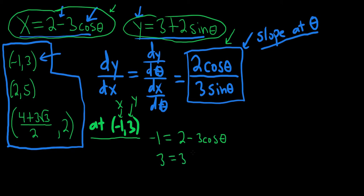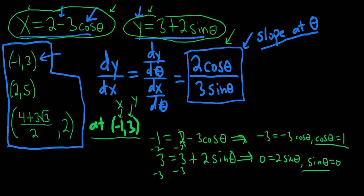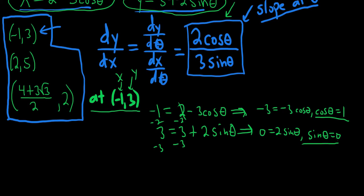Solving the first equation: subtract 2 from both sides to get -3 = -3cosθ, so cosθ = 1. Solving the second equation: subtract 3 from both sides to get 0 = 2sinθ, so sinθ = 0. These two conditions must be simultaneous — they have to occur at the same time.